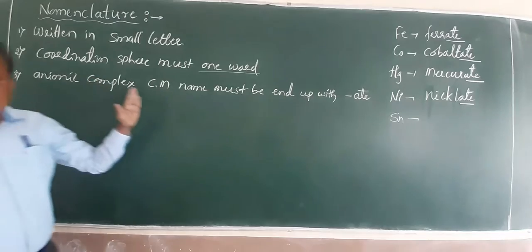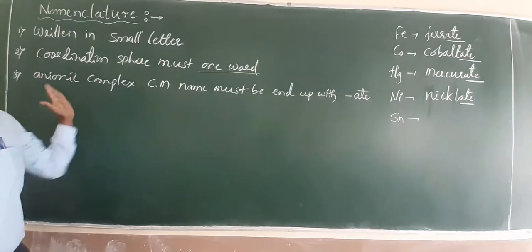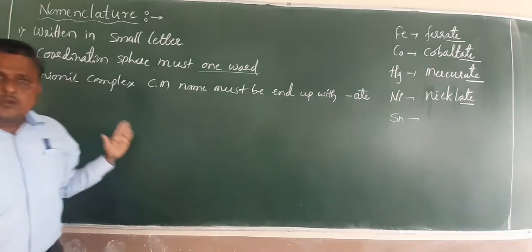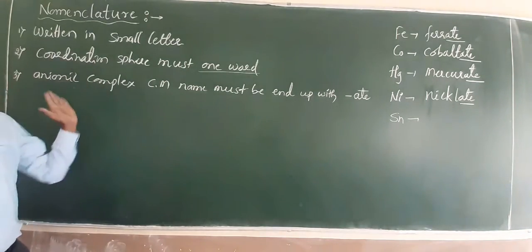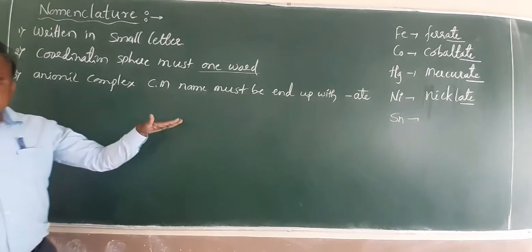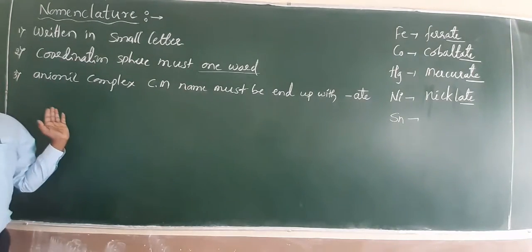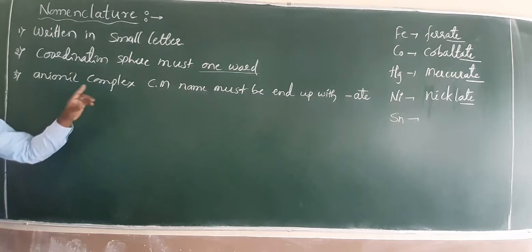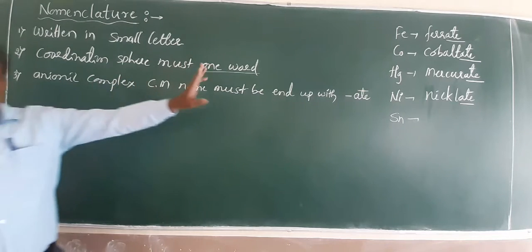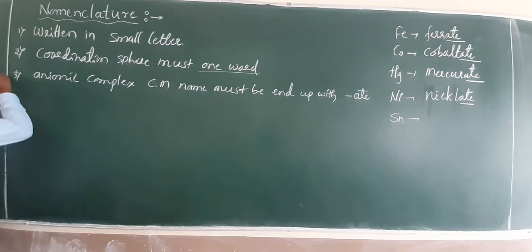If the complex is cationic, iron is iron, cobalt is cobalt, mercury is mercury — you do not change the metal name for cationic or neutral complexes. This is a very important point.